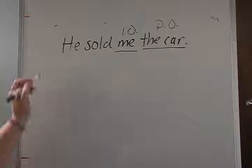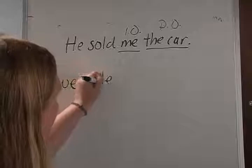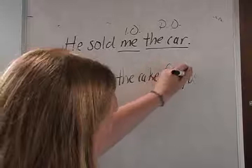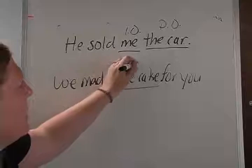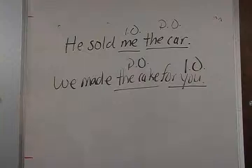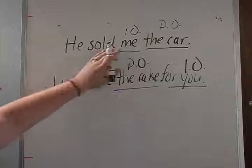We made the cake for you. What did we make? We made the cake — that's your direct object. Who did we make it for? For you — this is your indirect object. So if you can ask yourself those questions — what did he sell? The car. Who did he sell it to? To me — then you'll be able to figure out what your direct and indirect object pronouns are in the sentence.